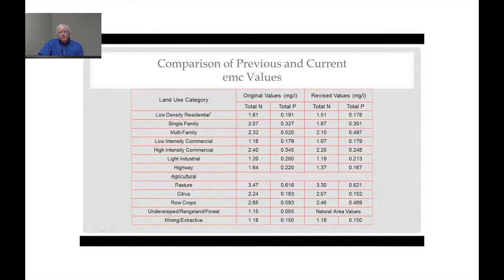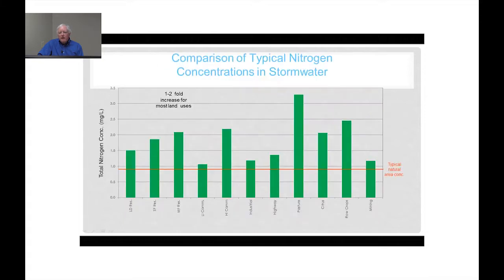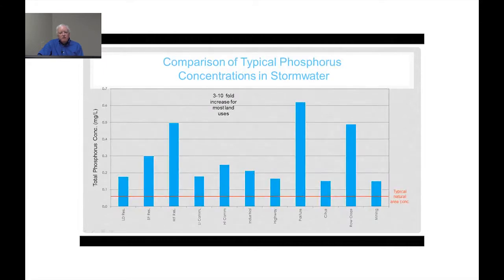This is a comparison of typical nitrogen concentrations in stormwater for different land uses, with a line illustrating a typical natural area concentration. As development occurs, nitrogen concentrations exhibit a one- to two-fold increase for most land uses. For phosphorus, we see three- to ten-fold increases for most land uses following development, compared with natural area concentrations.